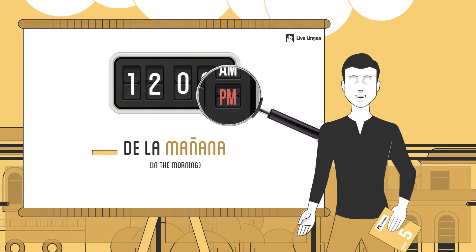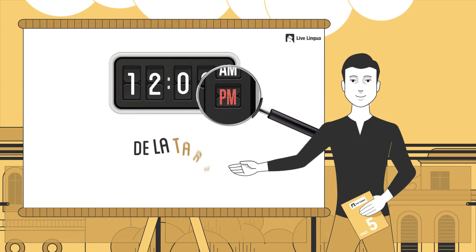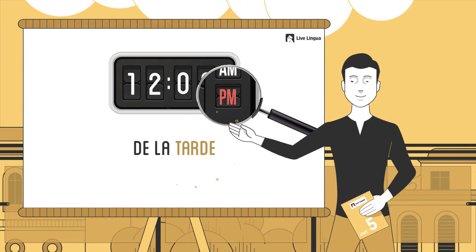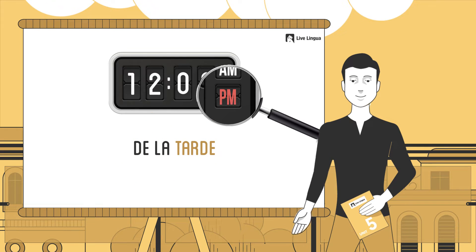To say p.m. in Spanish, you would say 'De la tarde.' De la tarde. Which means 'in the afternoon.'